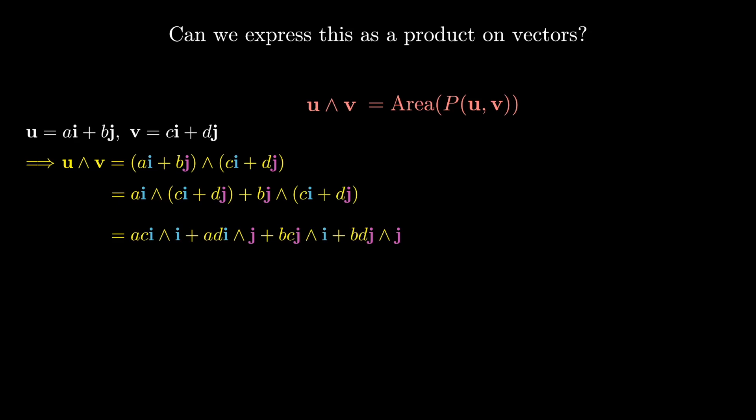Now i∧i is the area of the parallelogram formed with i and itself, and j∧j is the area of the parallelogram formed with j and itself, but that's just the area of a line which of course is zero.